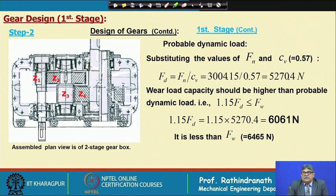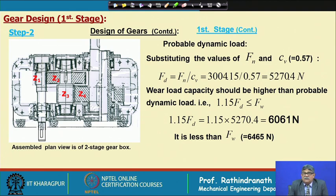We should keep in mind that hardening and grinding are expensive. Another approach is to slightly increase the active face width b. Instead of a width factor ψ = 20, for a helical gear we can go up to ψ = 25 if accurately cut. Increasing b increases the wear load capacity without increasing the dynamic load, since dynamic load is independent of face width. The gear size increases slightly, but cost may not increase much because we are not going for further hardening or grinding.